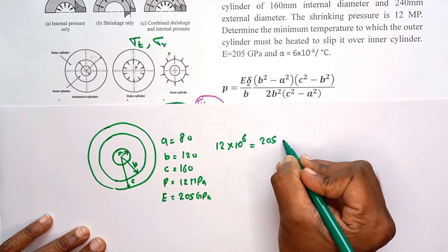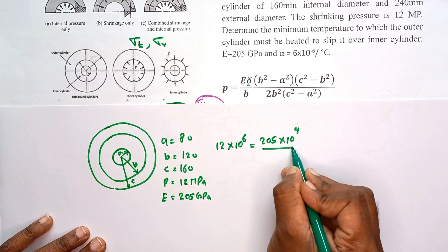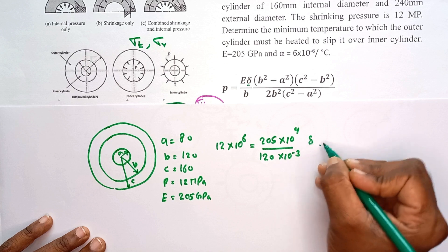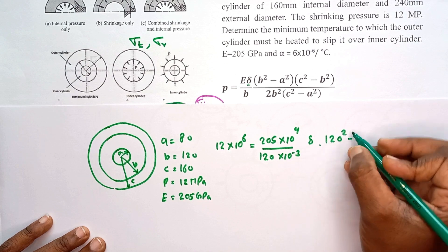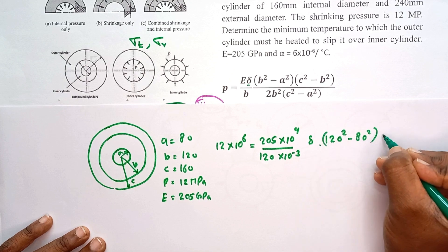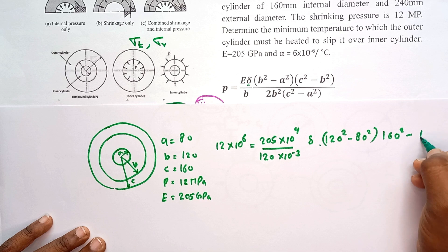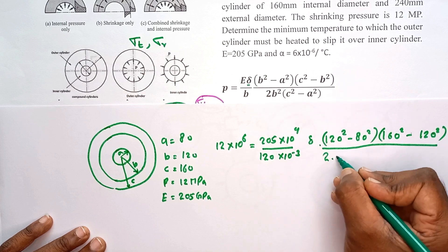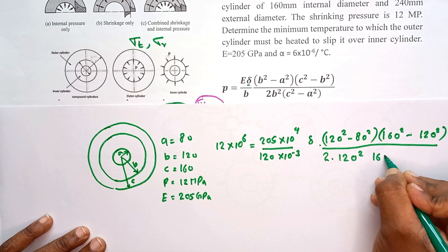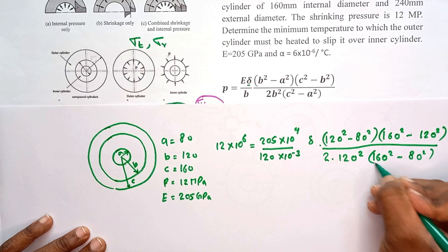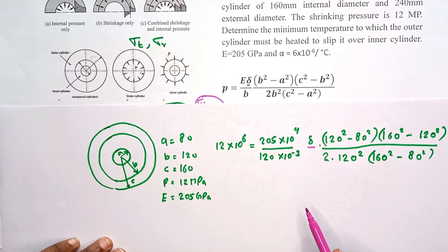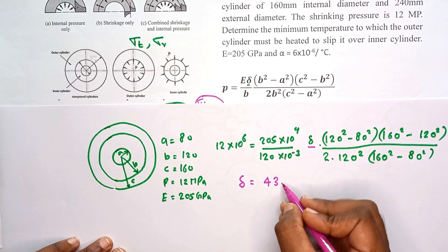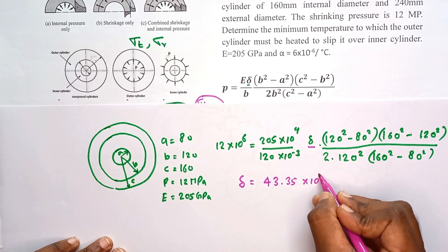Substituting into the equation: P equals (E divided by b) times delta, multiplied by terms involving b squared, c squared, and a squared — where the interface radius b equals 120 mm, the outer radius c equals 160 mm, and the inner radius a equals 80 mm. By solving this equation we are able to calculate delta. The delta value works out to 43.35 times 10 to the power of minus 6 meters.